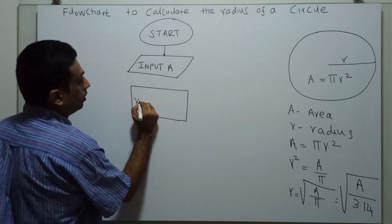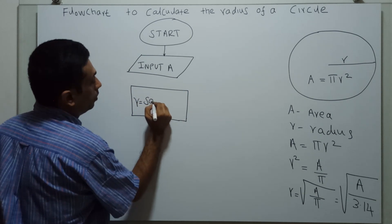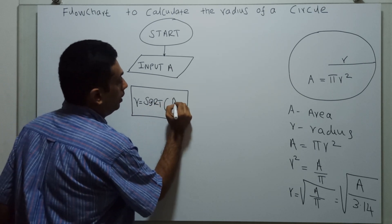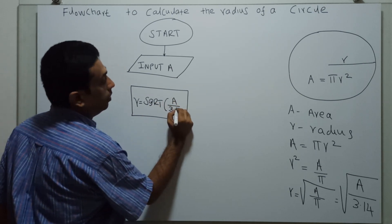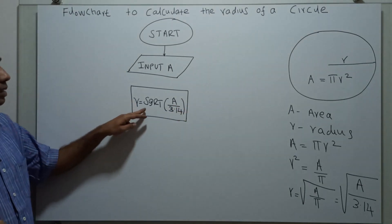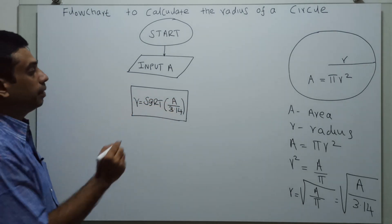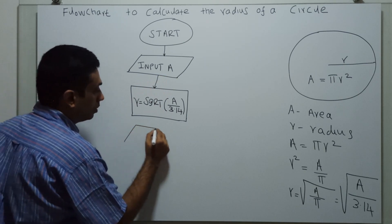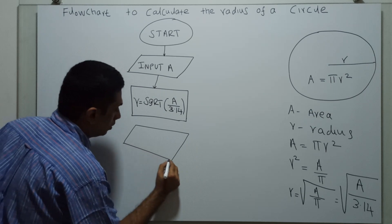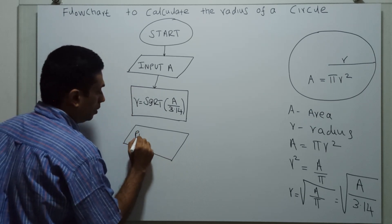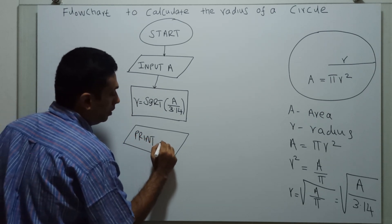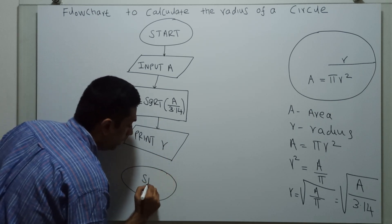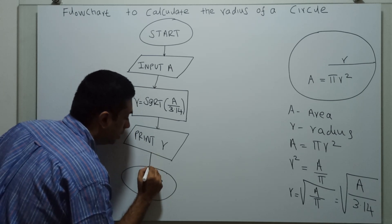Next I am going to calculate the radius from the given area. Radius r equal to sqrt — sqrt is a function for the square root — of area divided by 3.14. Next I am going to print the radius, and then end the flow chart.